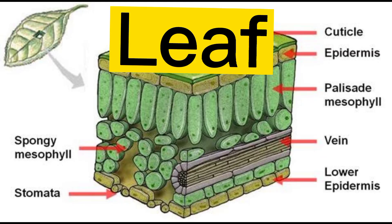When there are layers of tissues working together, they form an organ. Epidermal tissues, mesophyll tissues, and vascular tissues combine together to form an organ. Leaf is an organ.